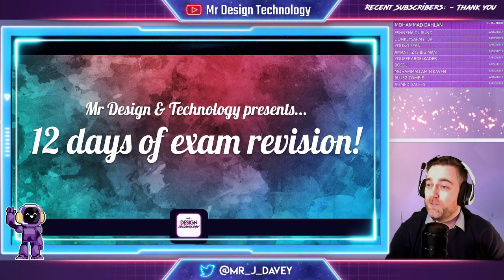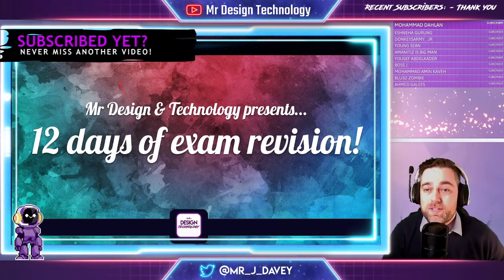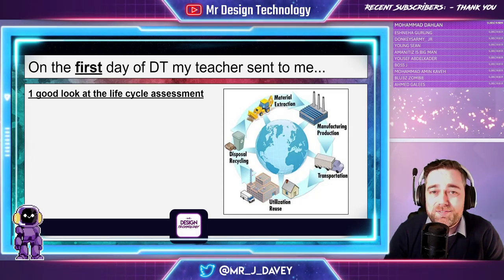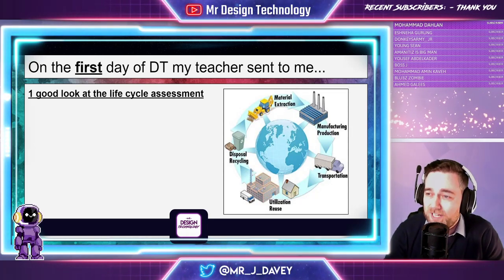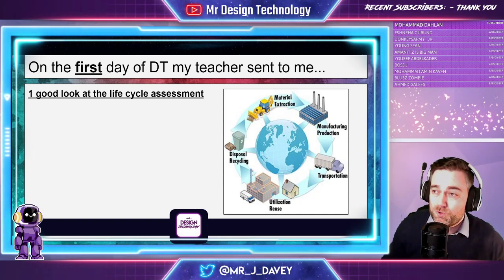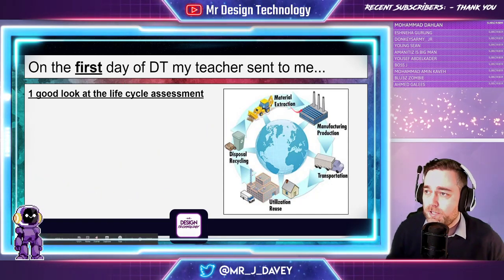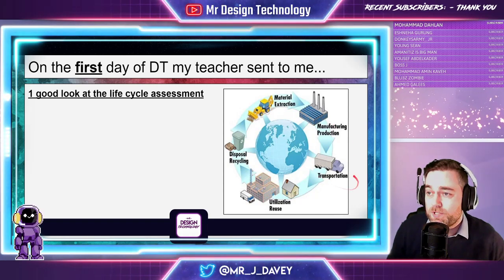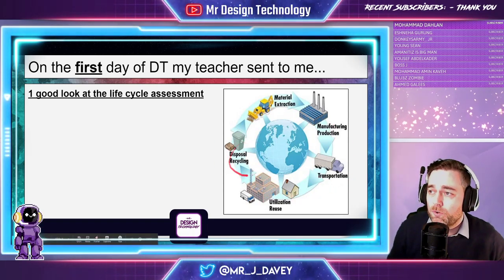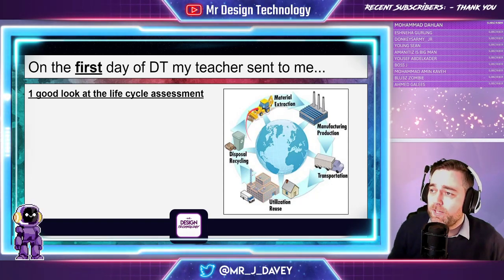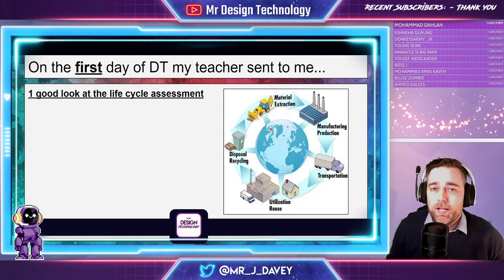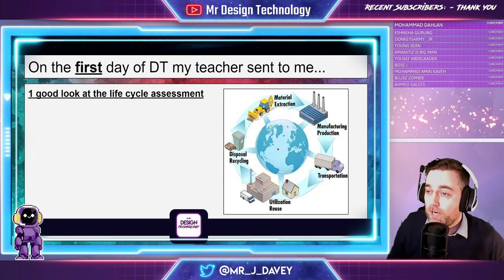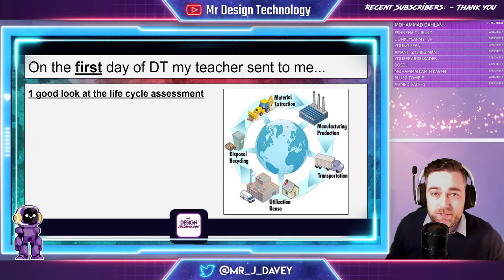Welcome to the 12 days of revision. We have to start with the first day — on the first day of DT my teacher sent to me: one good look at the life cycle assessment. Now I'm sure you've seen this diagram before. Using my pointer, we've got raw material extraction, part manufacturing, transportation, use, recycling or disposal, and then maybe it can go back again to raw material. You've probably got worksheets on it, but let's go a little bit deeper today.